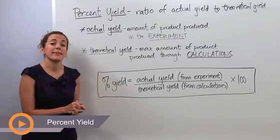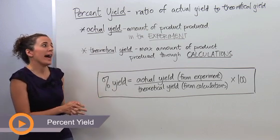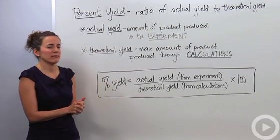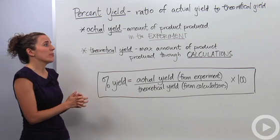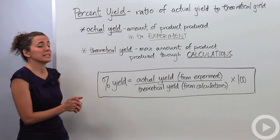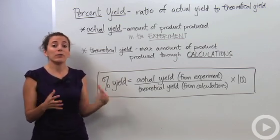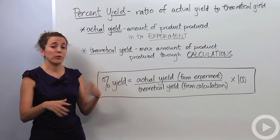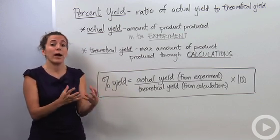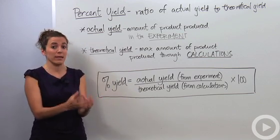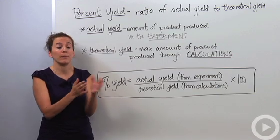We're going to talk about percent yield. Percent yield is the ratio of actual yield to theoretical yield. Actual yield is the amount of product produced in the experiment — if you're actually doing a lab, it's the actual amount of product that you as a student or chemist actually produce.